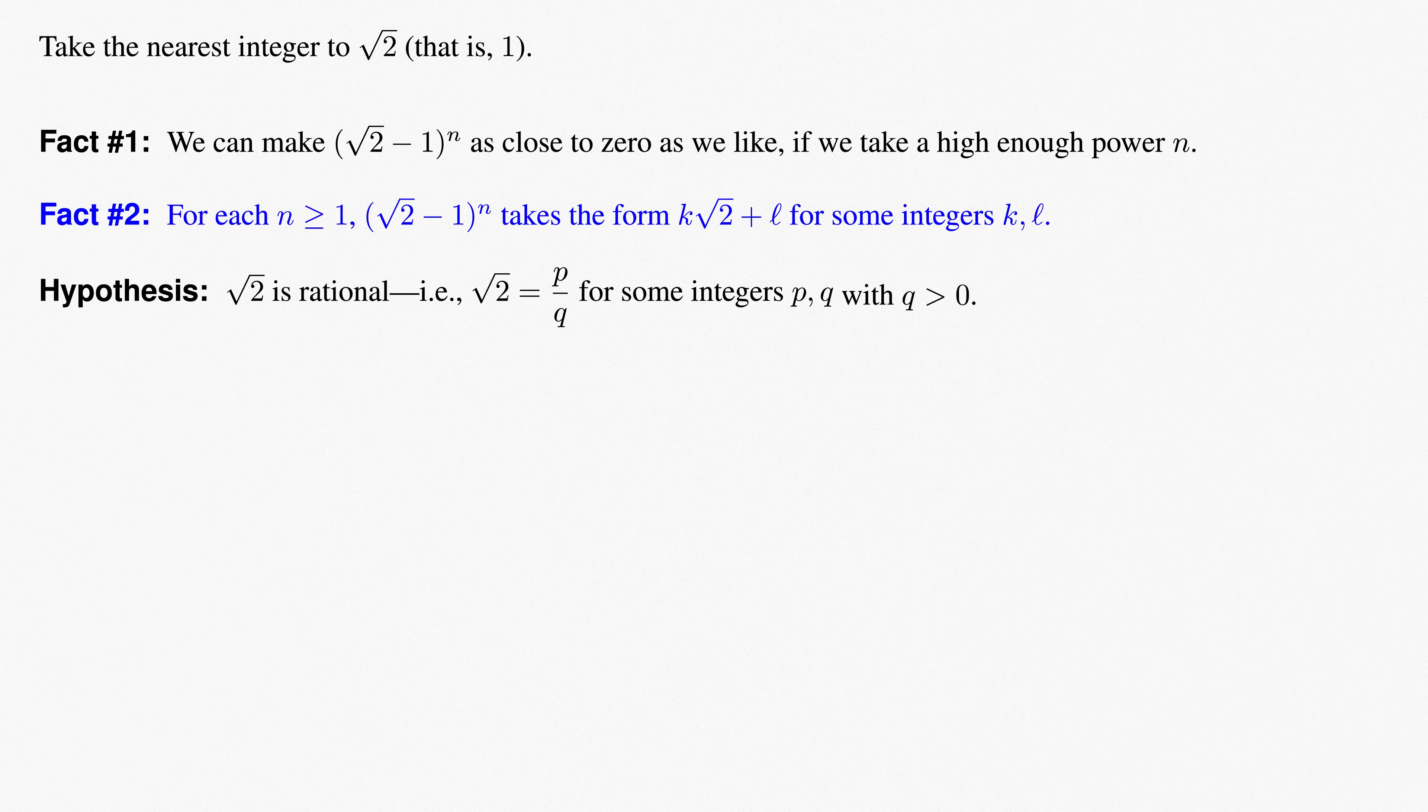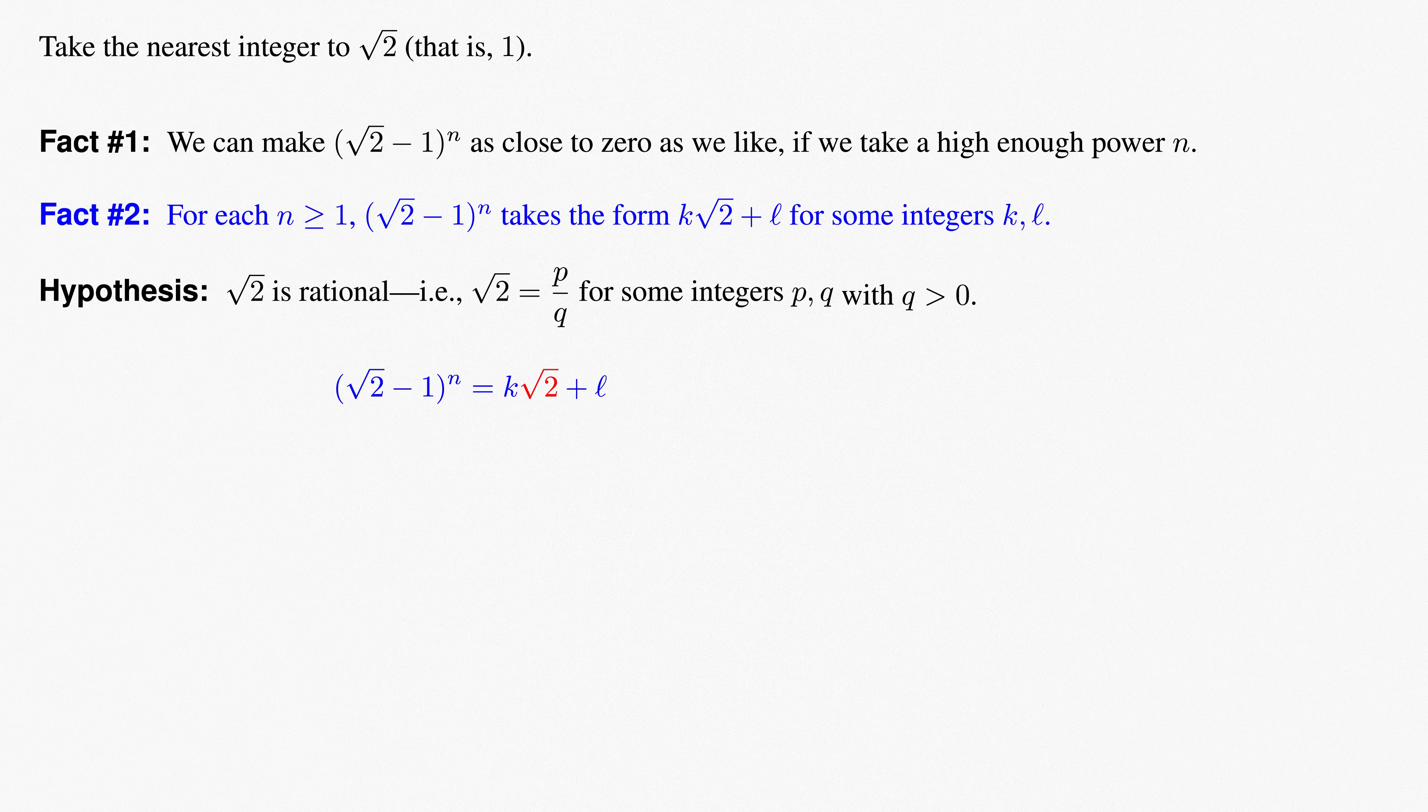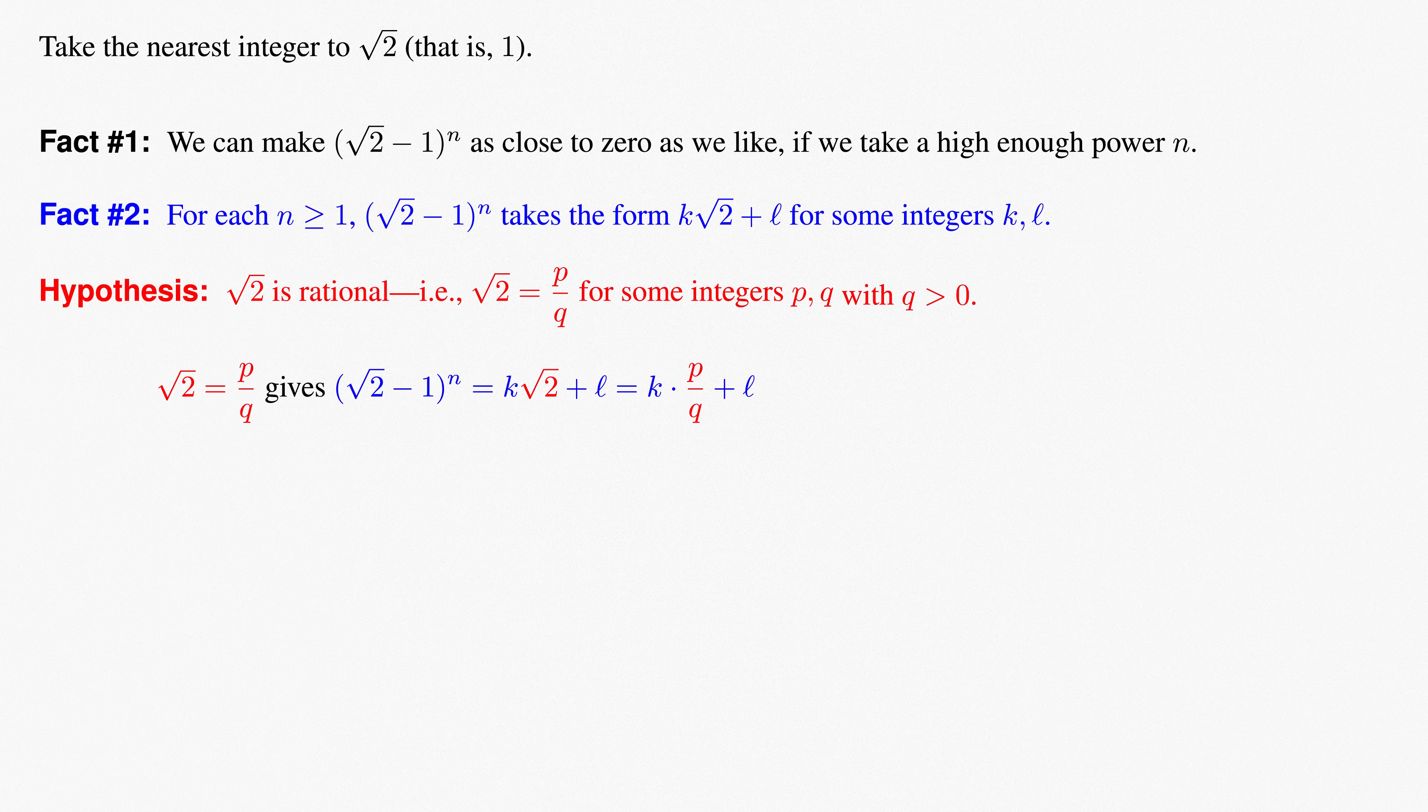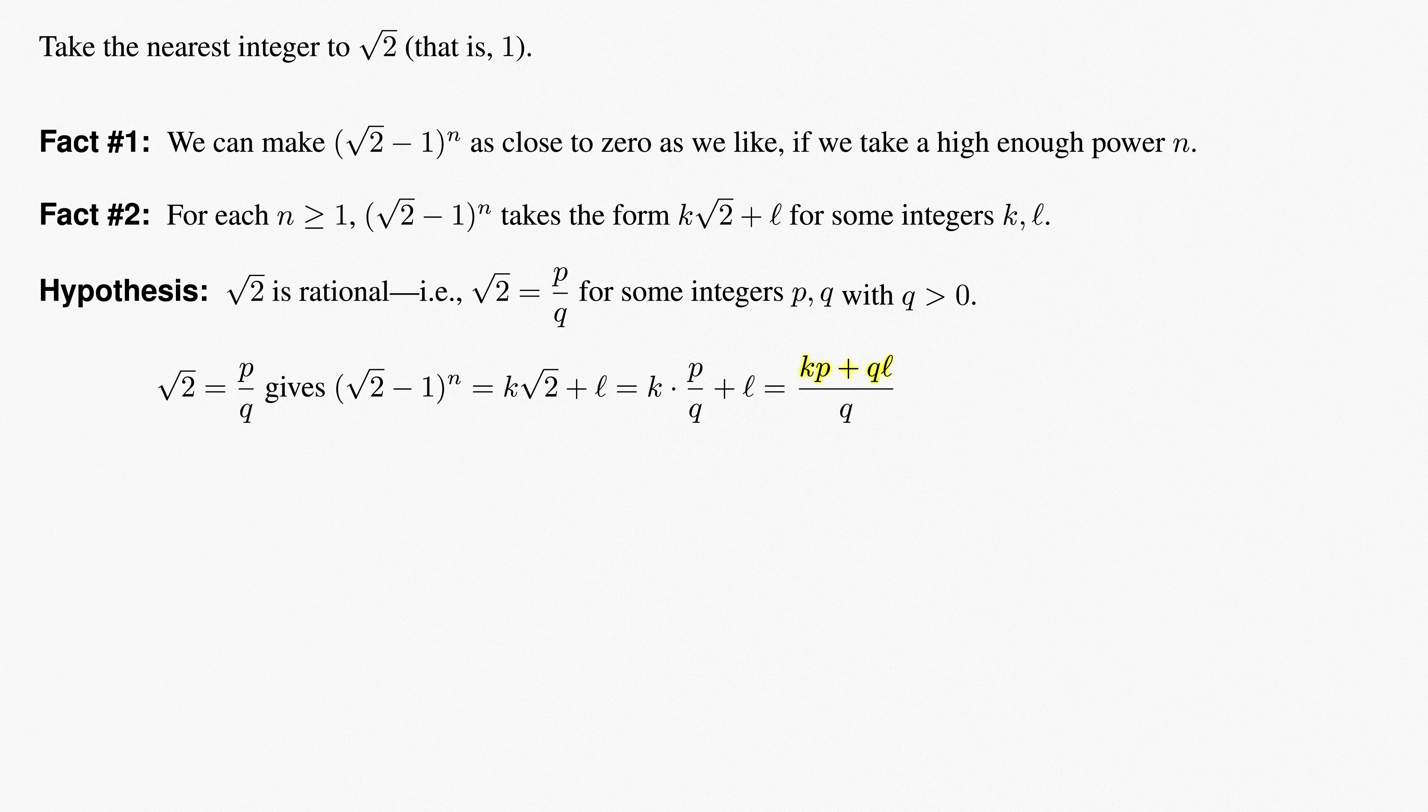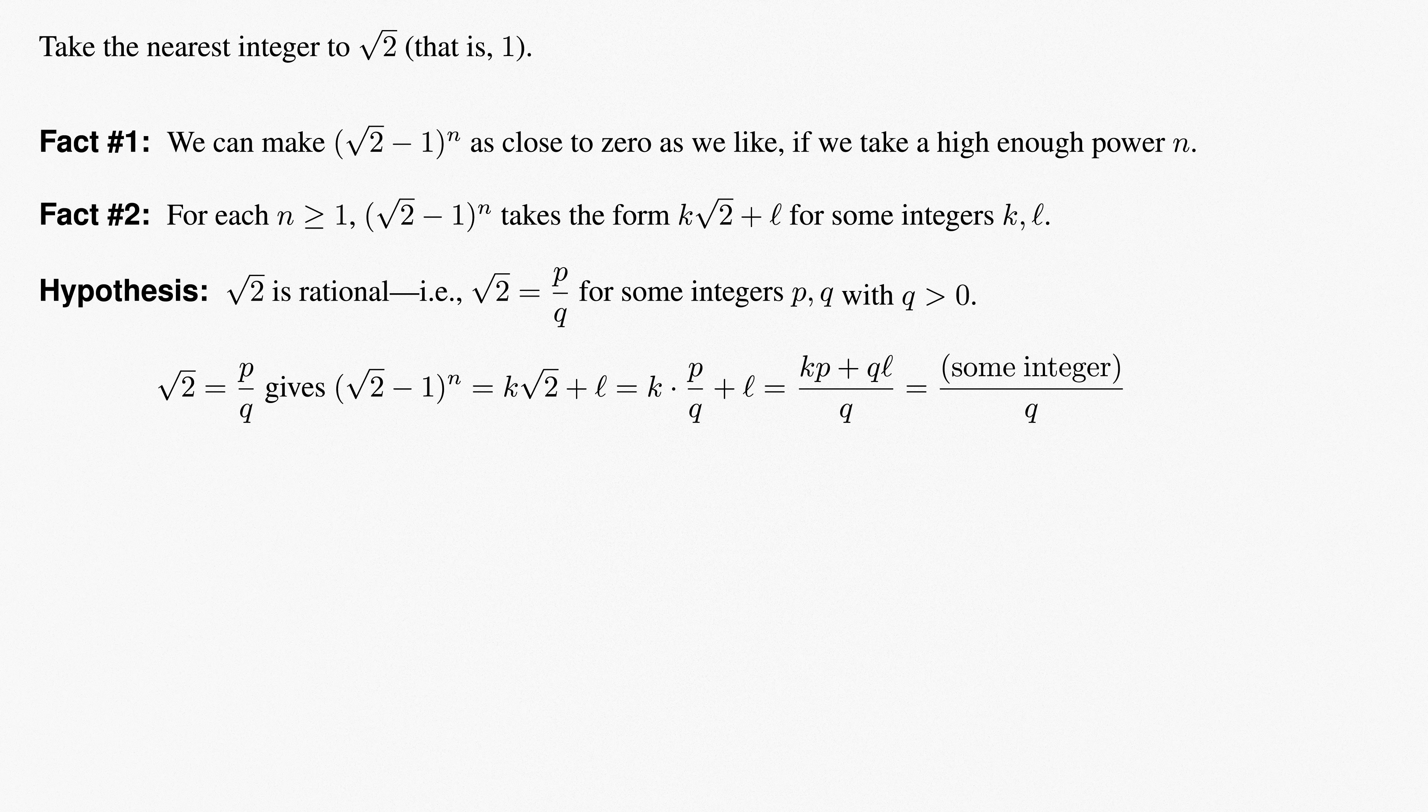Fact number 2 tells us that every power of root 2 minus 1 is of the form k root 2 plus l. Plugging in p over q for root 2 gives k times p over q plus l, which equals kp plus ql over q. All that matters about the numerator is that it's an integer. The numerator will change depending on the power we took. The key is that no matter what the power is, the denominator is always q.